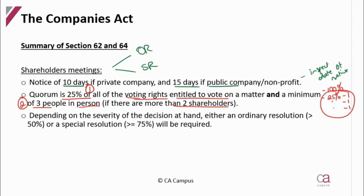Depending on how severe the decision is, they can either pass an ordinary resolution, which is more than 50% of the voting rights present, or if it's a special resolution, at least 75% or more of the people that are there.